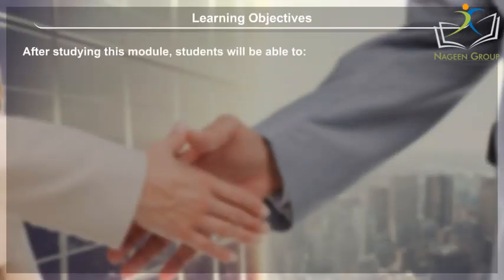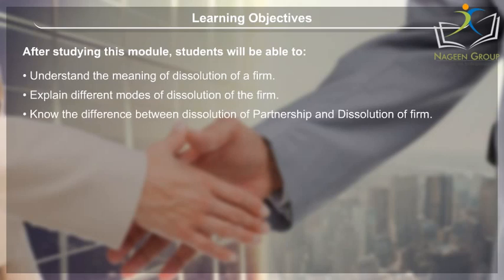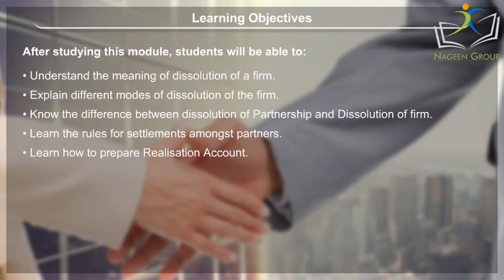Learning Objectives: After studying this module, students will be able to understand the meaning of dissolution of a firm, explain different modes of dissolution of the firm, know the difference between dissolution of partnership and dissolution of firm, learn the rules for settlements amongst partners, learn how to prepare realization account, and learn about the different journal and ledger entries.